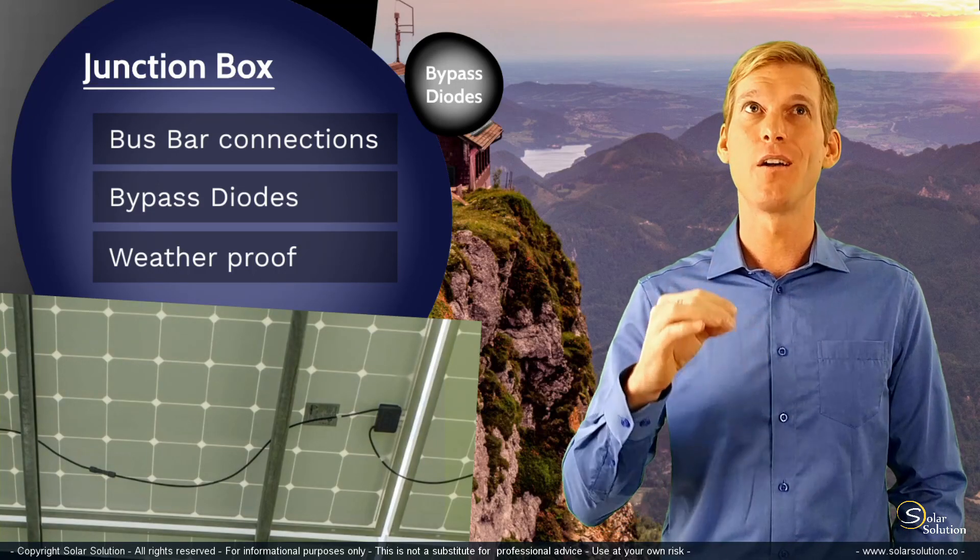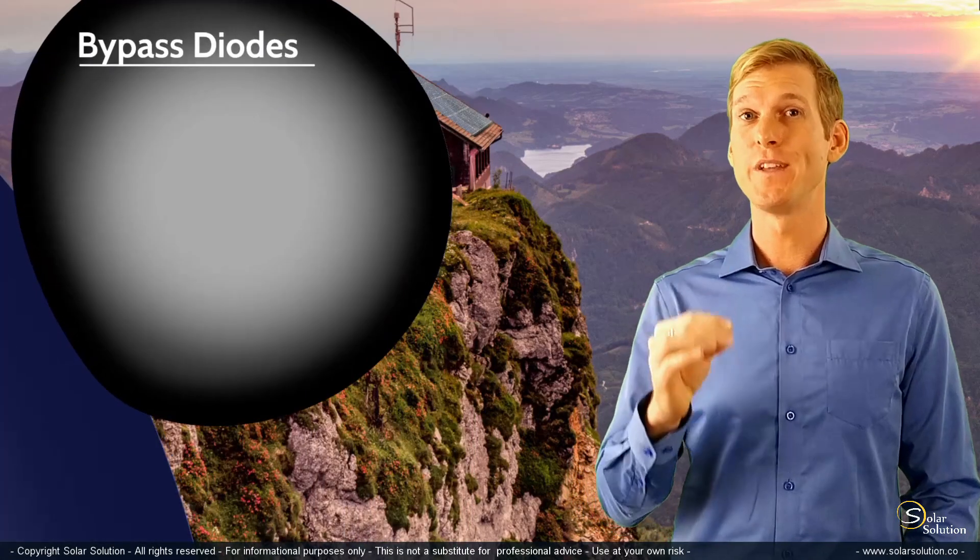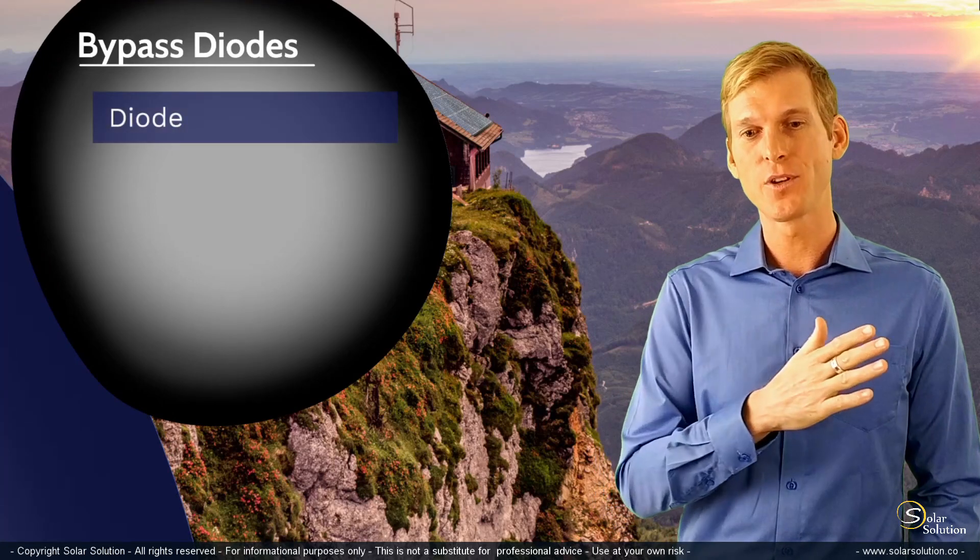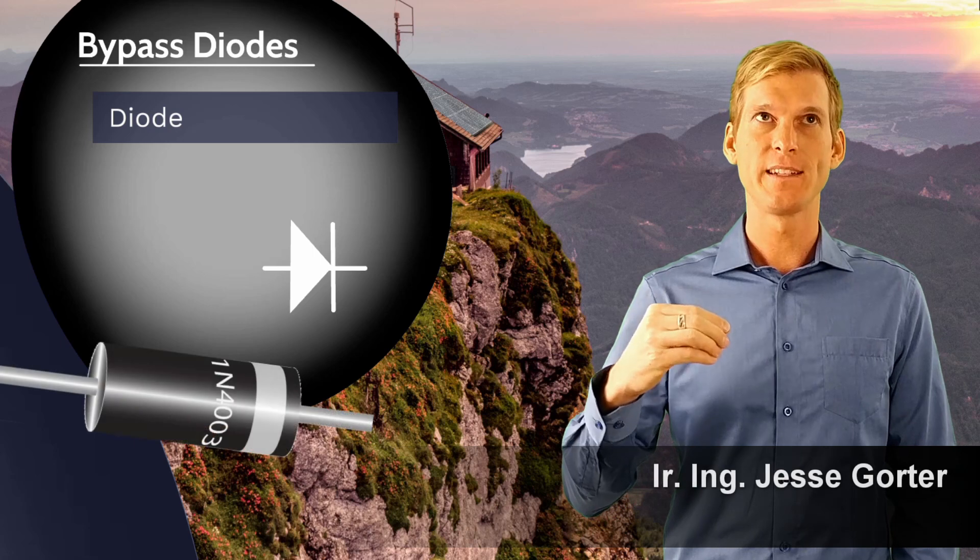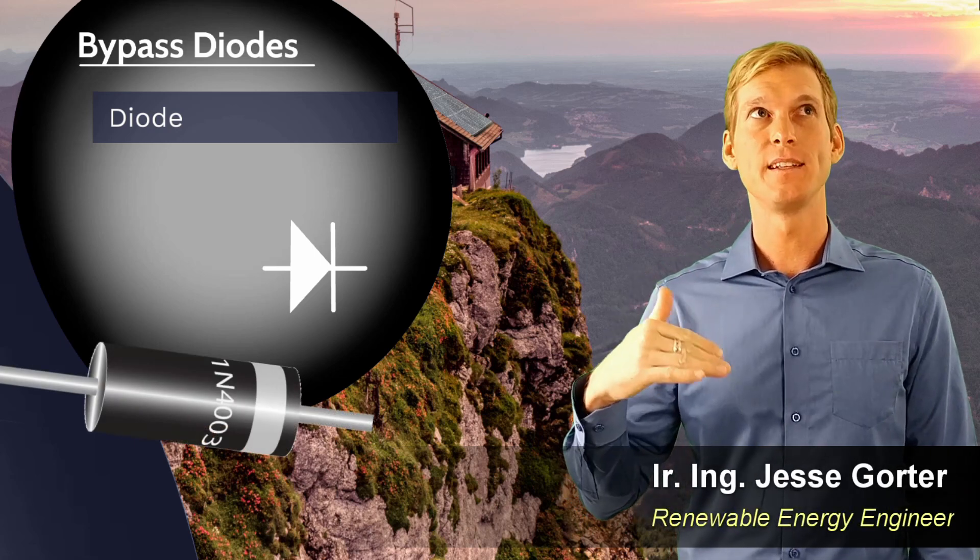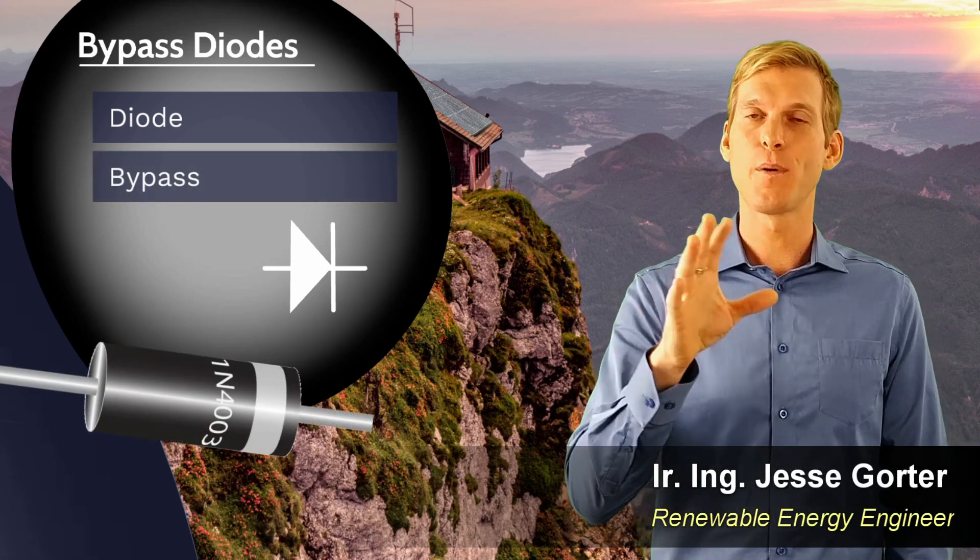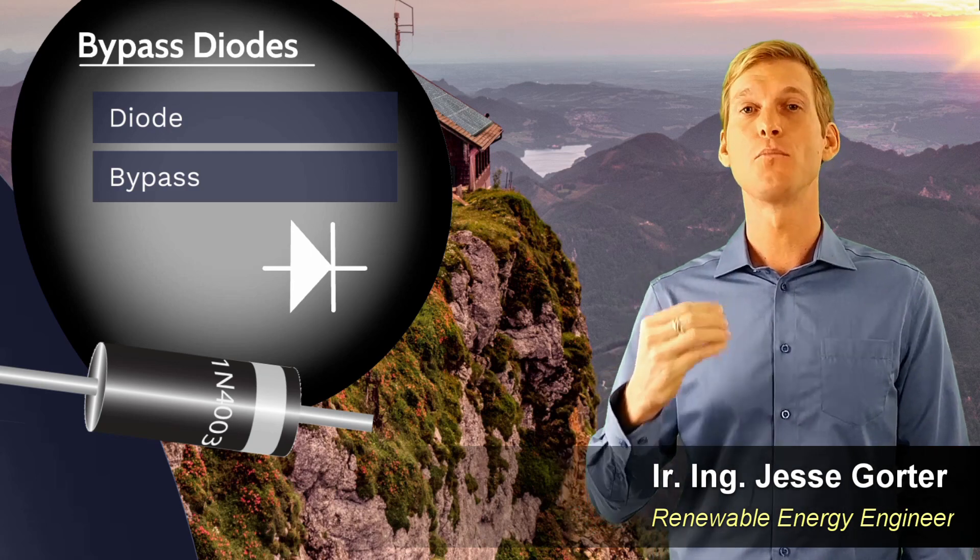Bypass diodes are electrical components called diodes which allow current to flow in only one direction. They provide a bypass, a way around your solar panel if part of your panel is not functioning properly.